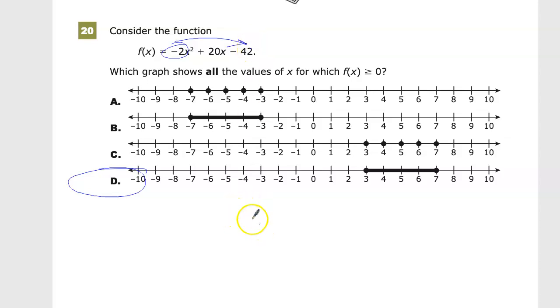I'll use the x-method. The number I want to make is +20, and I need 84 to get there because -2 × -42 = 84. So I'll do a factor list for 84: 1 and 84, 2 and 42, and eventually I get to 6 and 14.